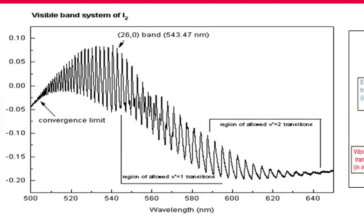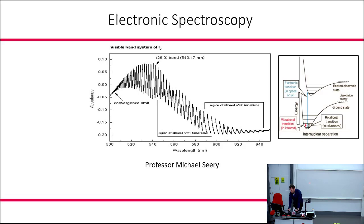We mentioned the idea of fine structure at the end of vibrational spectroscopy. In electronic spectroscopy this is called vibrational fine structure — in other words, details about not just an electronic transition, but electronic transitions to a series of vibrational levels within some upper state.